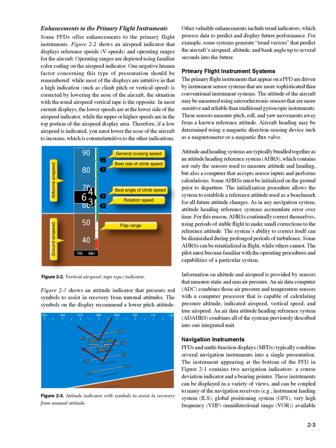Aircraft heading may be determined using a magnetic direction sensing device such as a magnetometer or a magnetic flux valve. Attitude and heading systems are typically bundled together as an Attitude Heading Reference System, AHRS, which contains not only the sensors used to measure attitude and heading, but also a computer that accepts sensor inputs and performs calculations. Some AHRSs must be initialized on the ground prior to departure. The initialization procedure allows the system to establish a reference attitude used as a benchmark for all future attitude changes.